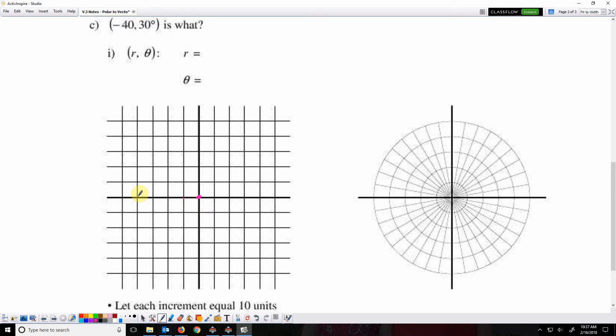10, 20, 30, 40. And then the y component is 30, 10, 20, 30. So there's the point, negative 40, 30.